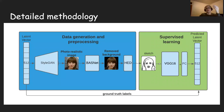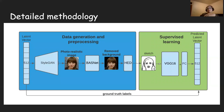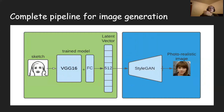To summarize our full method: we take a latent style vector and pass it into StyleGAN to get a real-looking image. We crop out the background and use HED (holistic edge detection) to generate what looks like a sketch, producing four sketches per image at varying levels of complexity. We then use that latent vector as the ground truth label, pass the sketch into our VGG16 feature extraction model, and try to predict the latent vector. If we predict it well enough, we can feed it back into StyleGAN to get a good-looking image consistent with the sketch.